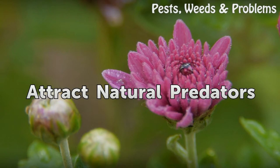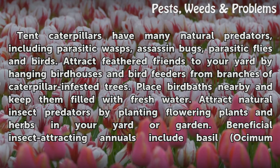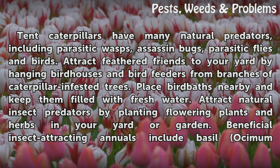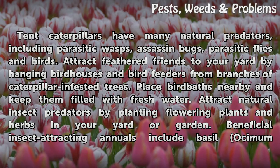Tent caterpillars have many natural predators, including parasitic wasps, assassin bugs, parasitic flies, and birds. Attract feathered friends to your yard by hanging birdhouses and bird feeders from branches of caterpillar-infested trees. Place bird baths nearby and keep them filled with fresh water. Attract natural insect predators by planting flowering plants and herbs in your yard or garden.